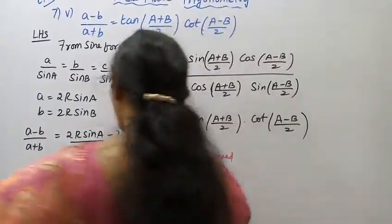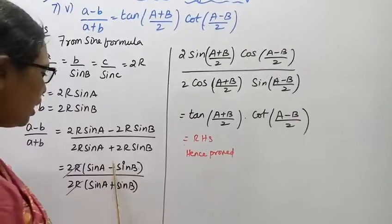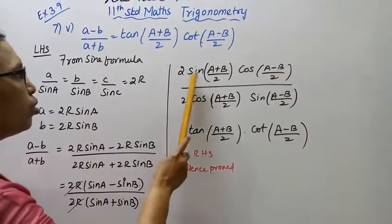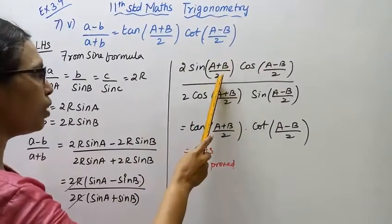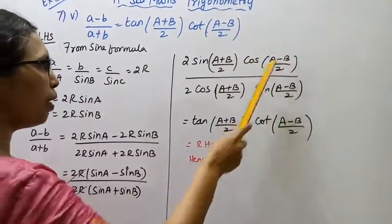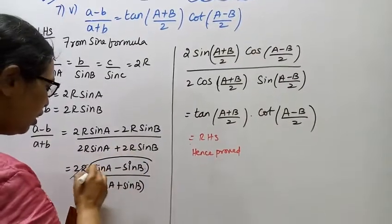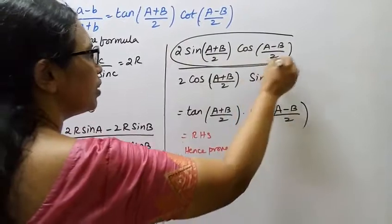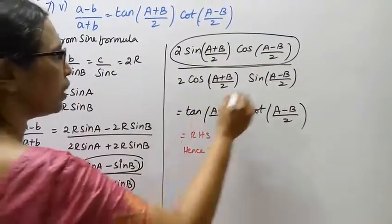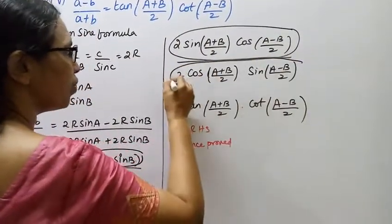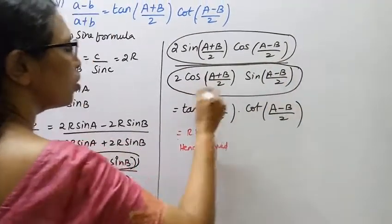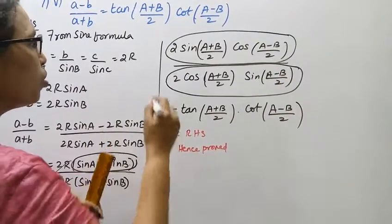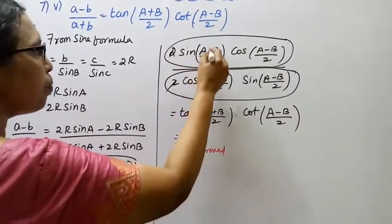Now apply the sum-to-product formulas: sin C minus sin D equals 2 sin((C-D)/2) cos((C+D)/2), and sin C plus sin D equals 2 cos((C+D)/2) sin((C-D)/2). So the numerator becomes 2 sin((A+B)/2) cos((A-B)/2) and the denominator becomes 2 cos((A+B)/2) sin((A-B)/2). The 2s cancel.